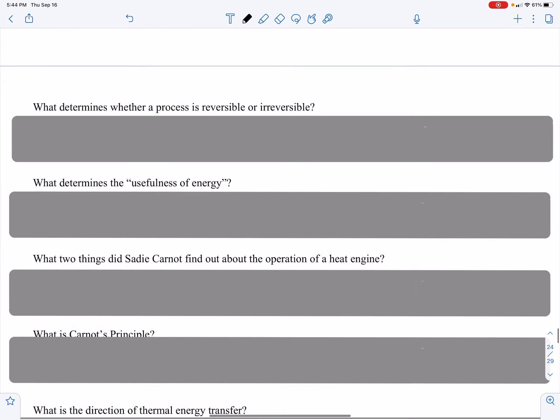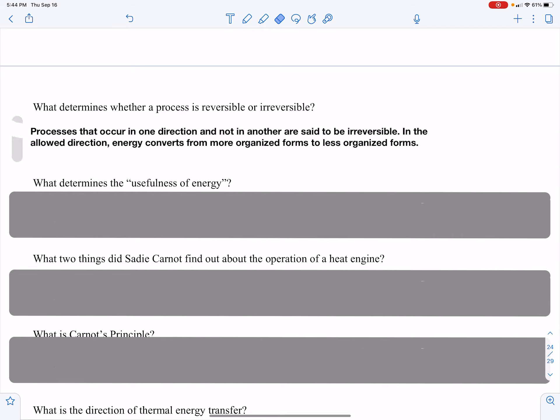So what determines whether a process is reversible or irreversible? Processes that occur in one direction and not in another are said to be irreversible. In the allowed direction, energy converts from a more organized form to a less organized form.